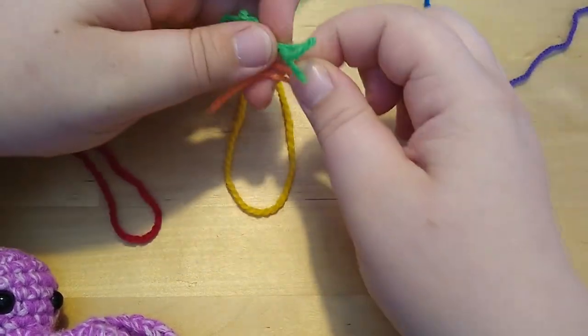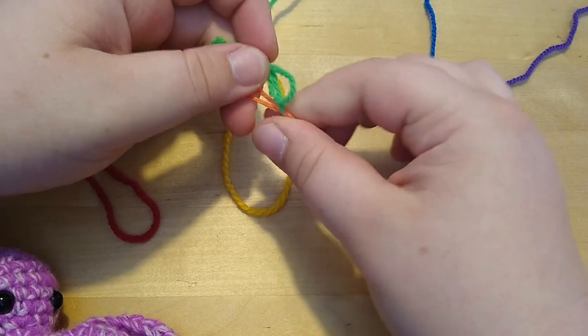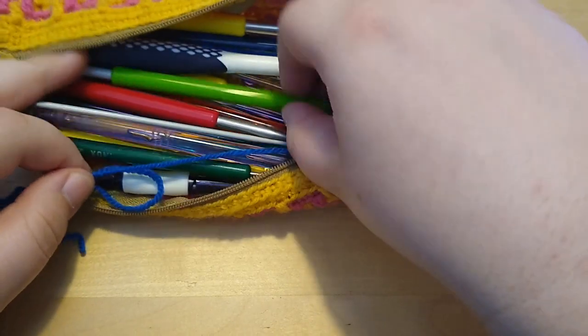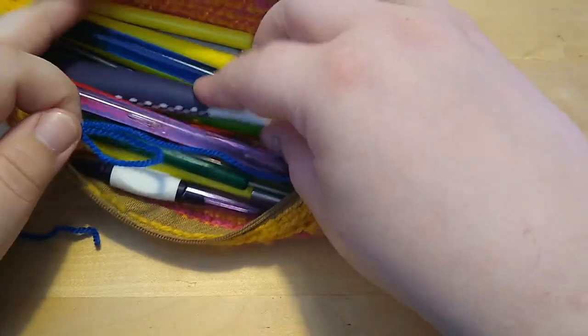That brings the yarns up to a similar enough thickness. I just need to find out what size hook I need, so I'm trying out various ones and 5mm seems to work the best for this one.